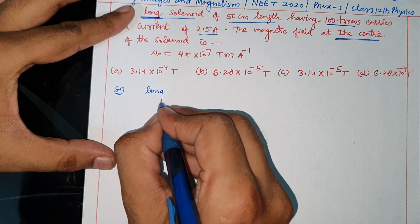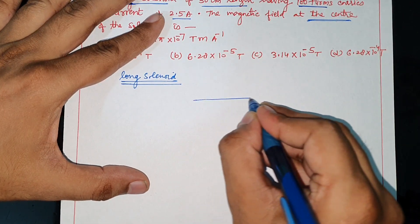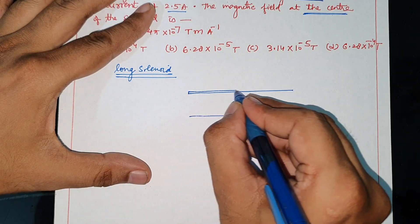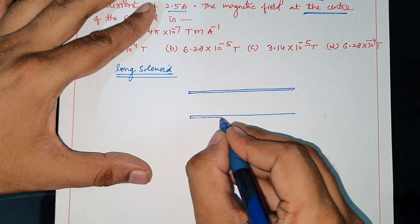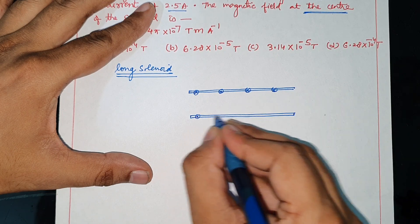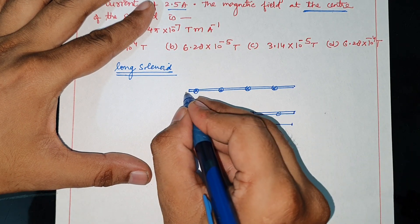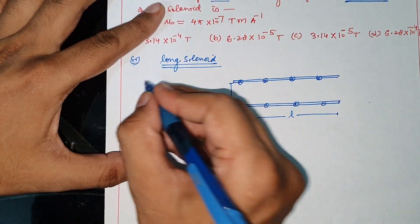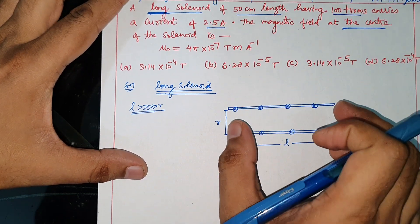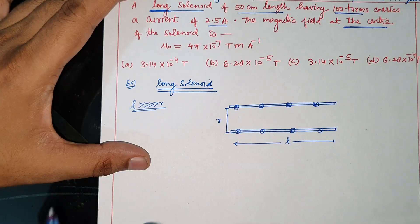Sabse pehle, long solenoid ka matlab kya hai? Long solenoid ka matlab hai ki agar yeh solenoid hai — ek cross-sectional view dikha rahe hain — toh yahan current andar ki taraf hai aur yahan current bahar ki taraf hai. Solenoid ki length hai L aur radius hai R. Long solenoid ka matlab hai ki jo L hai woh R se bahut bada ho — jaise yahan length 50 cm aur radius 0.2–0.3 mm — toh L compared to R bahut bada ho, use long solenoid keh sakte ho.